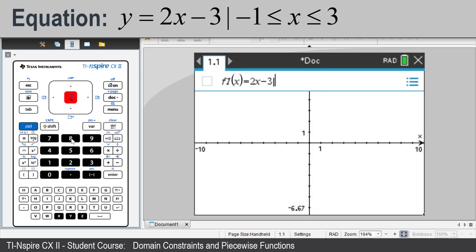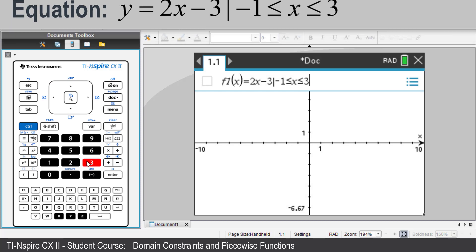Negative 1. CTRL equals to select the less than or equal to. 3. Press enter.